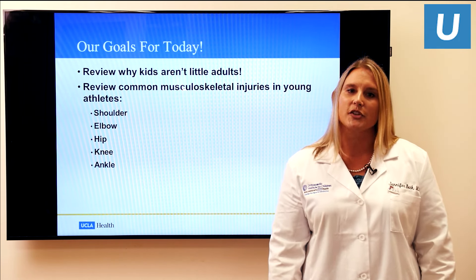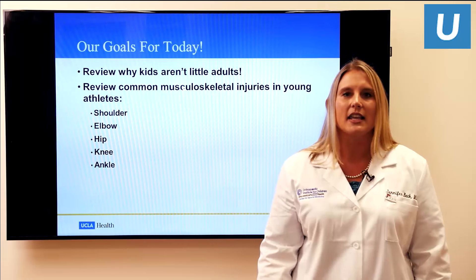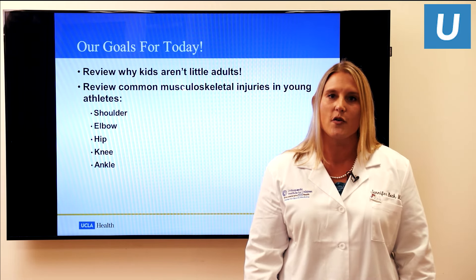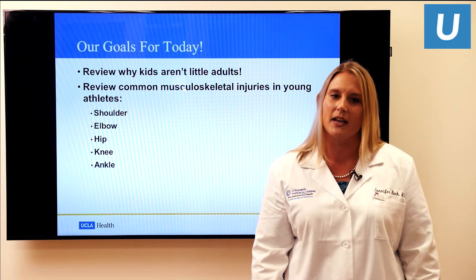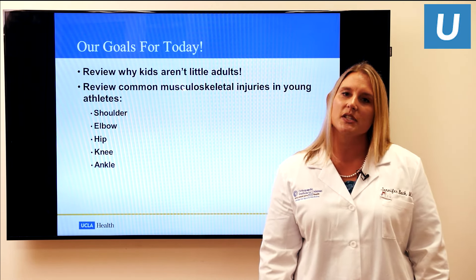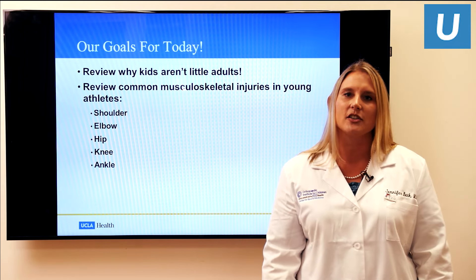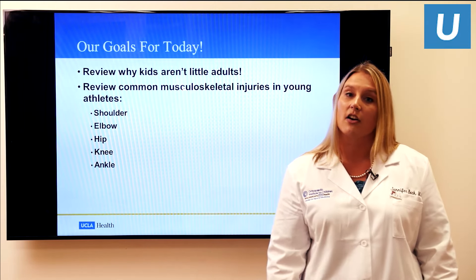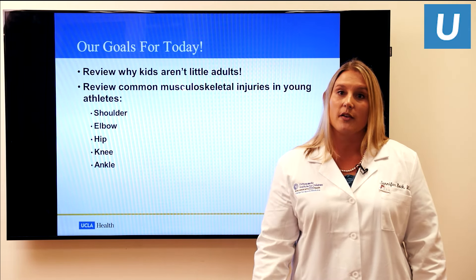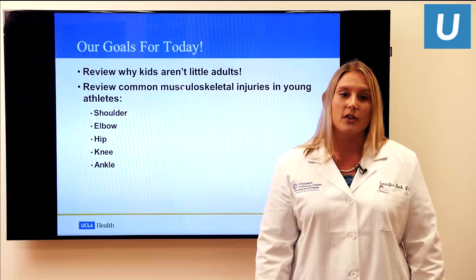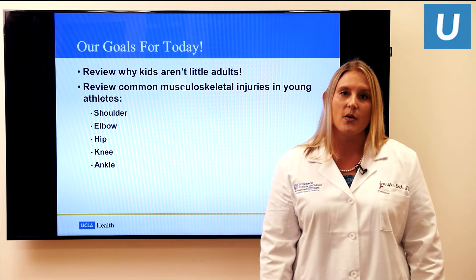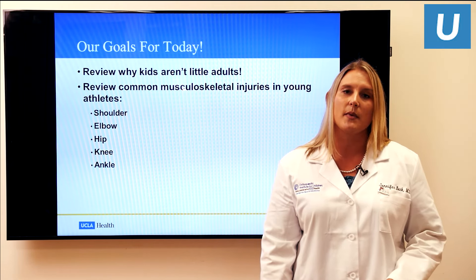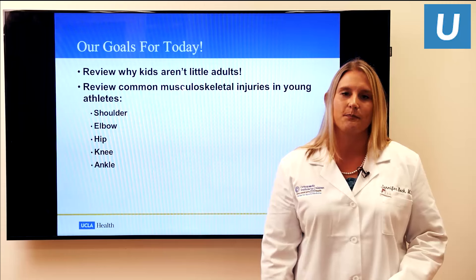Our goals for today: I want to review initially why kids aren't just little adults. We'll go over some basic terminology and anatomy. Afterwards, I'm going to go through some of the most common musculoskeletal injuries that I see in our young athletes today, going from the upper extremity — the shoulder and elbow — and then working down to the lower extremity with hip, knee, and ankle pathology.